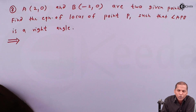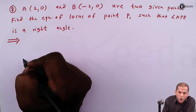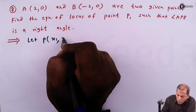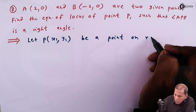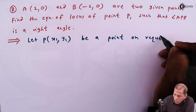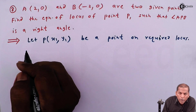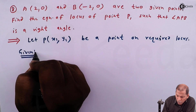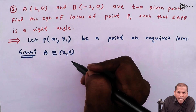Now let's see the solution. The solution is quite simple. First of all, we consider P at (x1, y1) to be a point on the required locus. Then, given A is equivalent to (2, 0) and B is equivalent to (-2, 0).